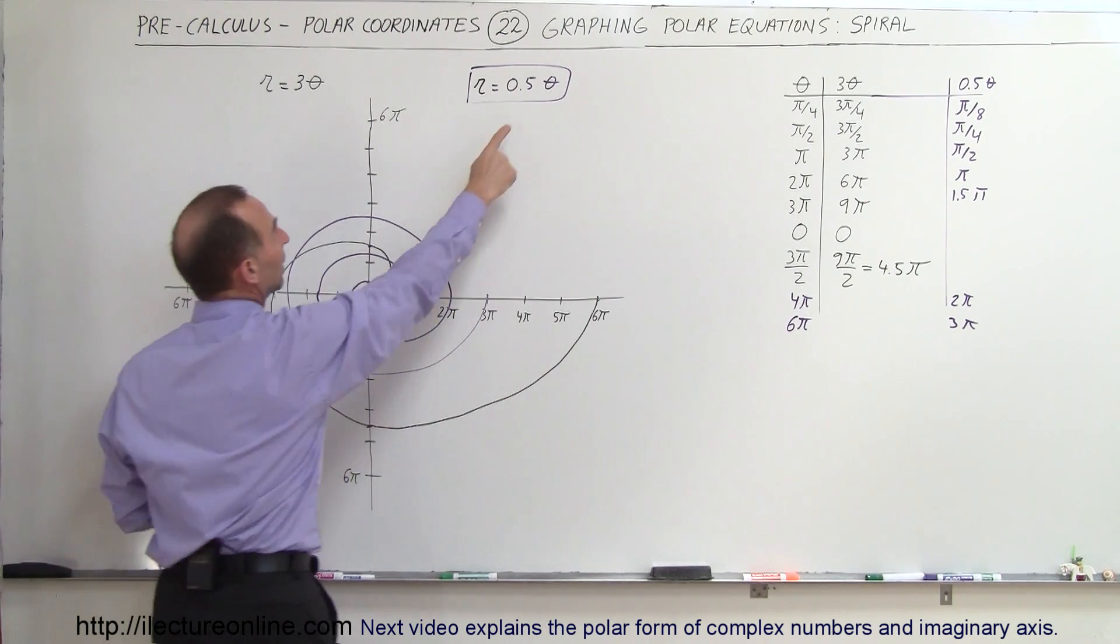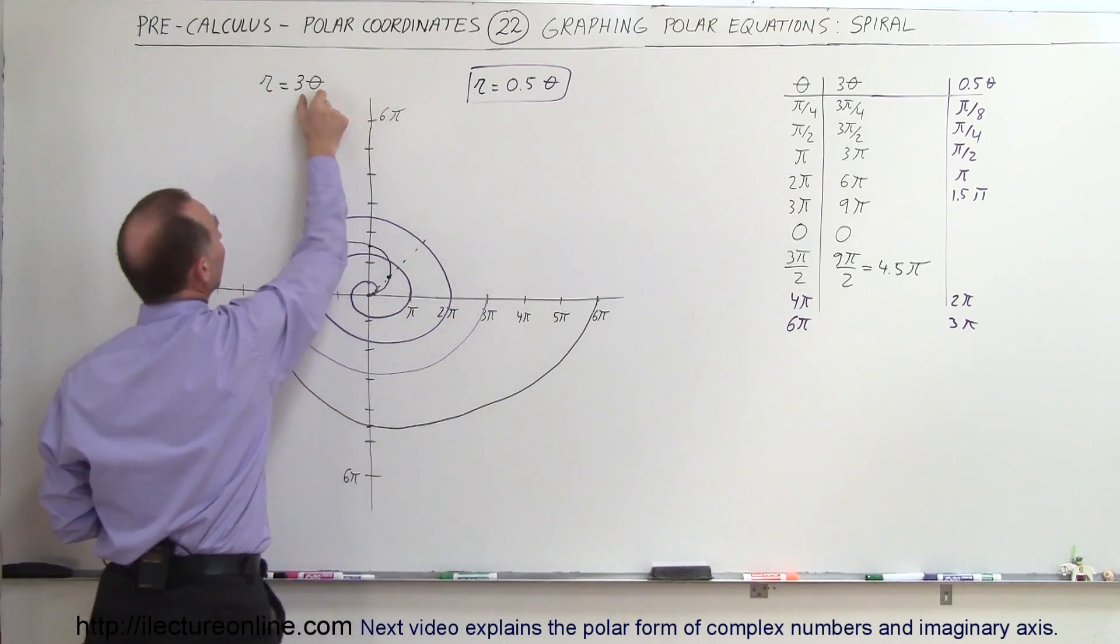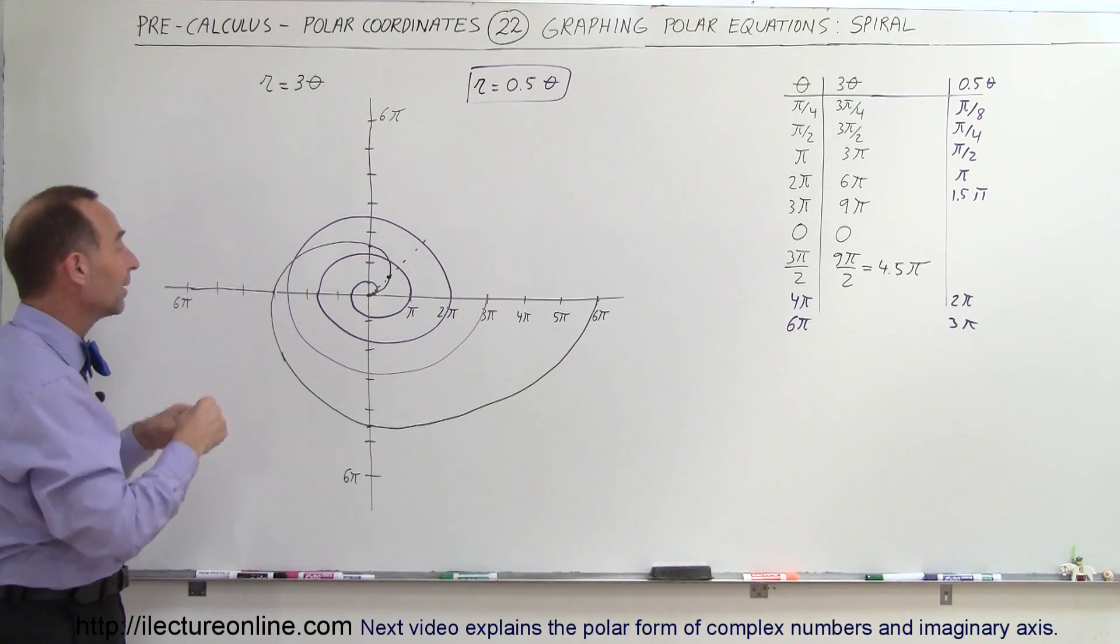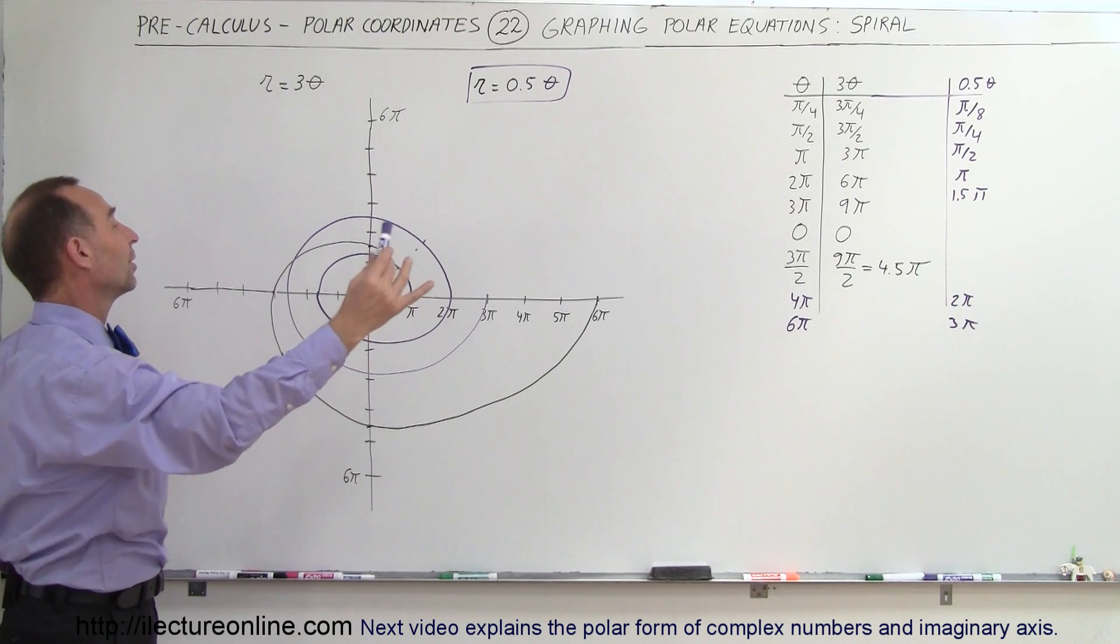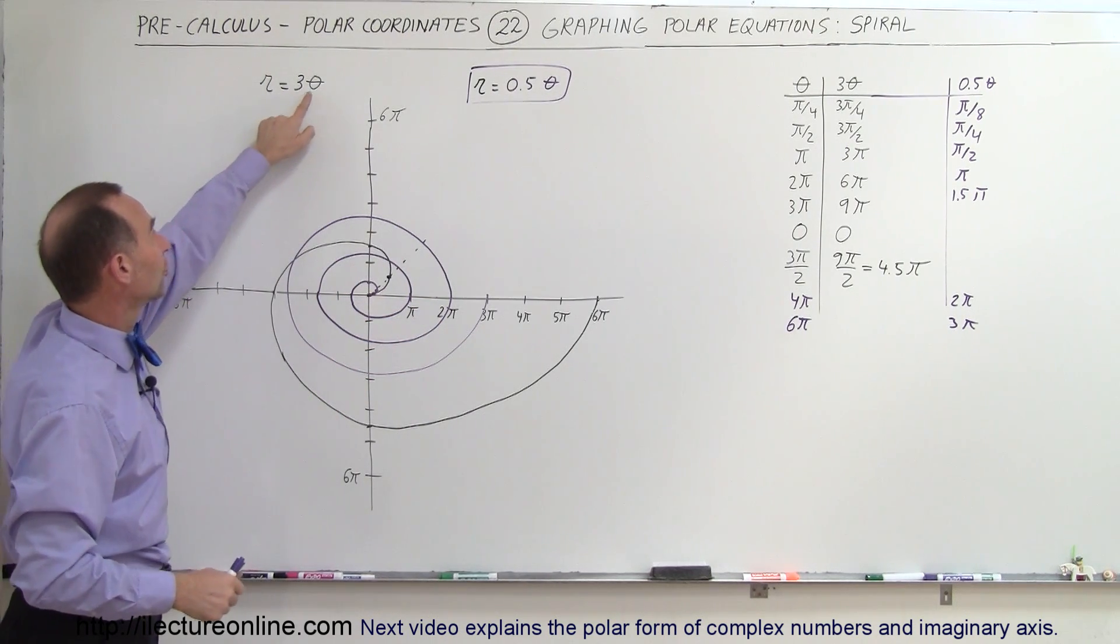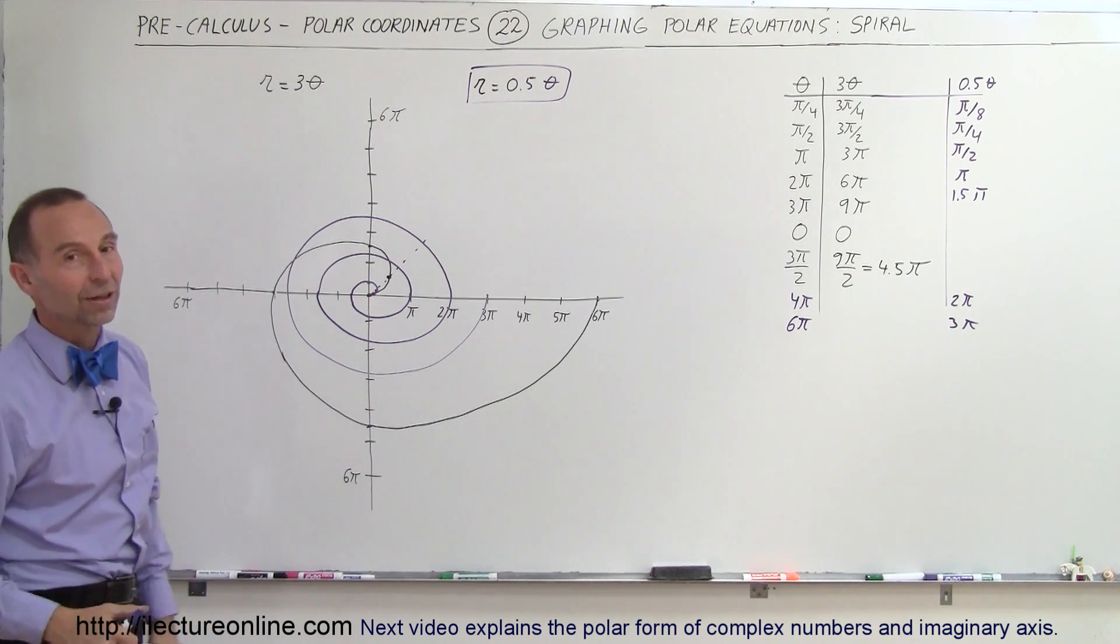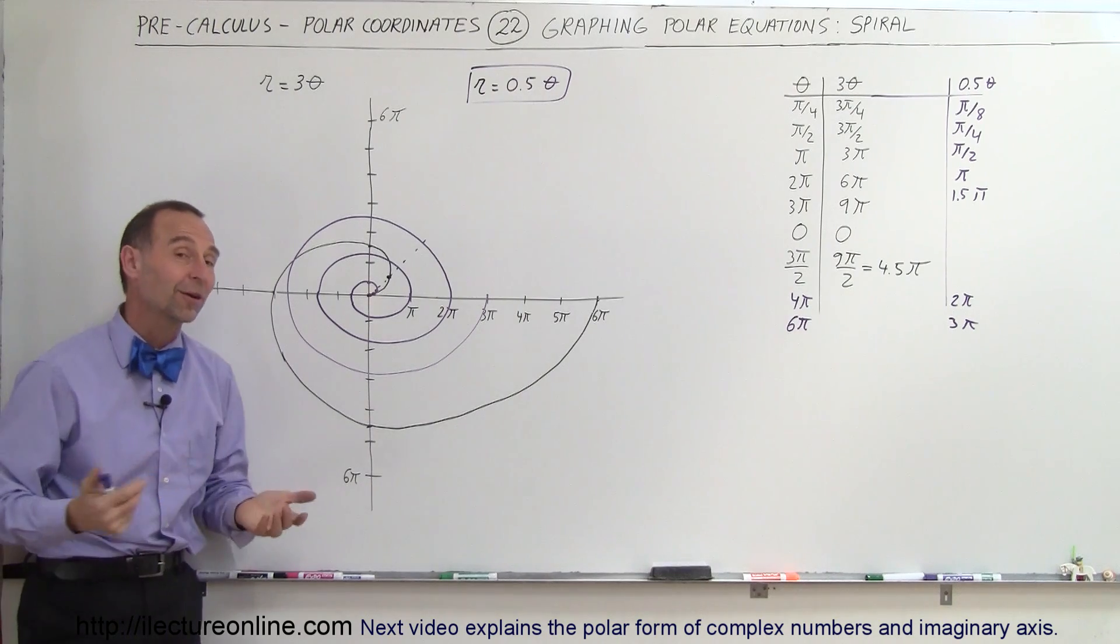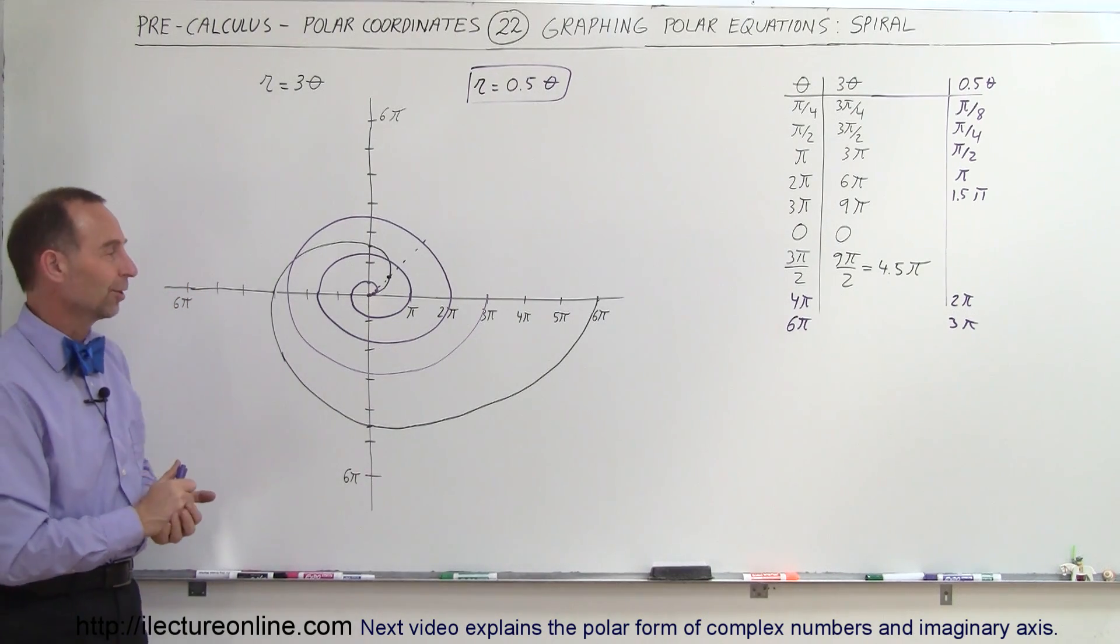So the number here, the constant in front of the angle theta, will determine how many spirals you're going to have as you go around as the function simply slowly expands. So r gets bigger and bigger, proportional to the angle and proportional to the constant that we have there. So two nice examples to show you what a spiral function looks like in polar coordinates.